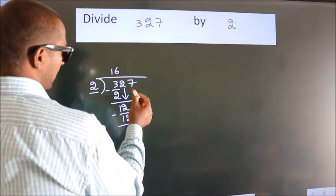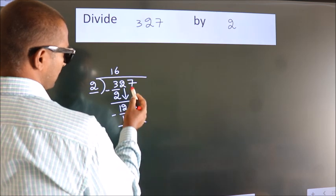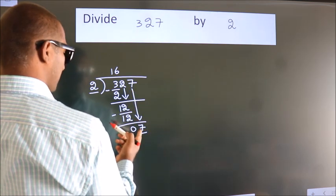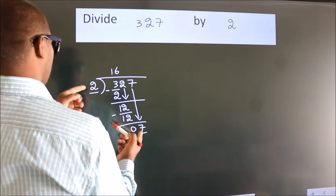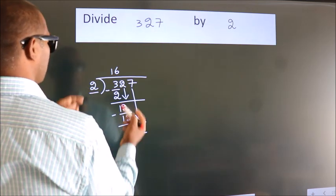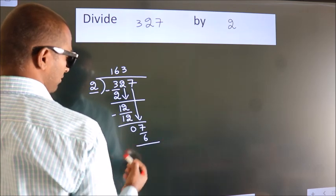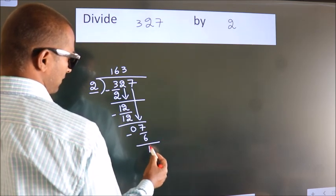After this, bring down the beside number. So, 7 down. So, 7. A number close to 7 in the 2 table is 2 threes are 6. Now, we subtract. We get 1.